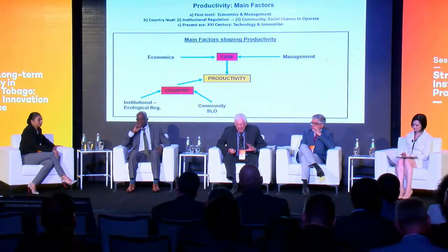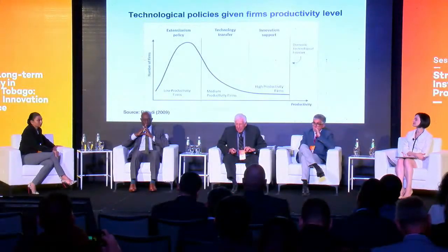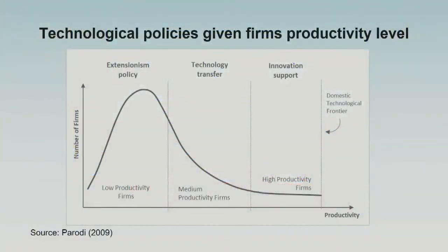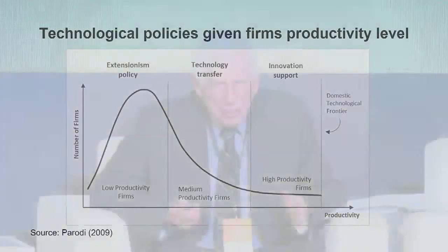In the 21st century, technology and innovation are critical, and we are entering the fourth industrial revolution. From a policy perspective, technological policies differ according to a firm's productivity level. Low-productivity firms need extensionist policies; medium-productivity firms require technology transfer; and top-performing firms need support to innovate and push the domestic technological frontier forward.